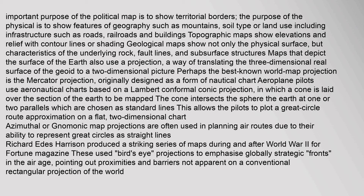Maps that depict the surface of the earth use a projection — a way of translating the three-dimensional real surface of the geoid to a two-dimensional picture. Perhaps the best known world map projection is the Mercator projection, originally designed as a form of nautical chart. Aeroplane pilots use aeronautical charts based on a Lambert conformal conic projection, in which a cone is laid over the section of the earth to be mapped. Azimuthal or gnomonic map projections are often used in planning air routes due to their ability to represent great circles as straight lines.